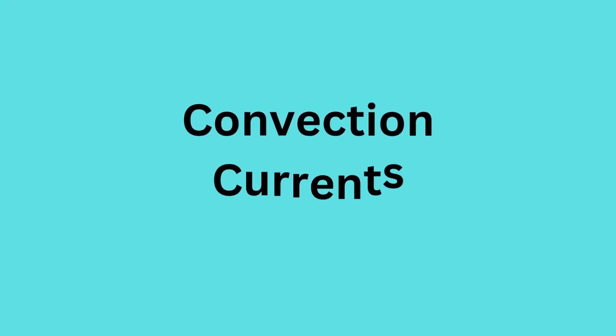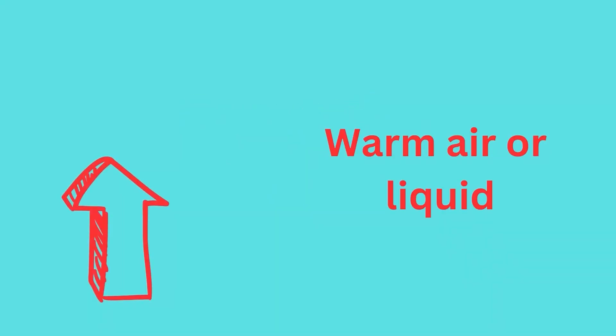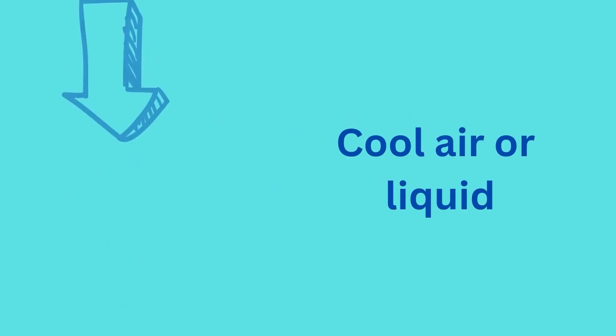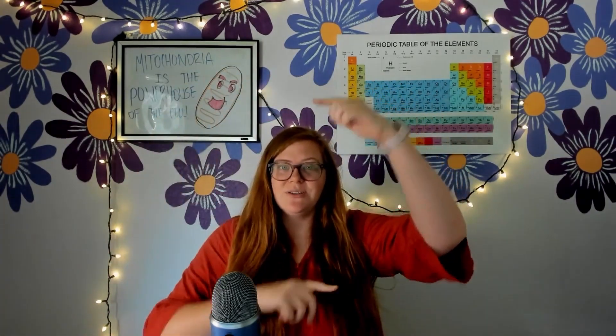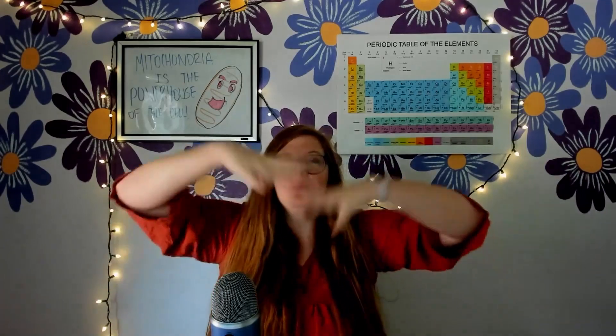Convection currents is a process where warm air rises and cool air sinks. This happens over and over, creating a big cycle of warm air rising and cool air going to the bottom. It almost looks like a big circle.